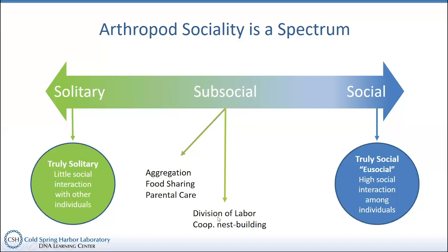As we go up the spectrum, we start seeing other behaviors develop, such as division of labor. This deals with things like cooperative nest building — when individuals living together in a colony divide up and partition the tasks of colony life. For example, if a bunch of bugs live in a hole they're digging, some of them will spend time digging so others can go deeper into the ground.